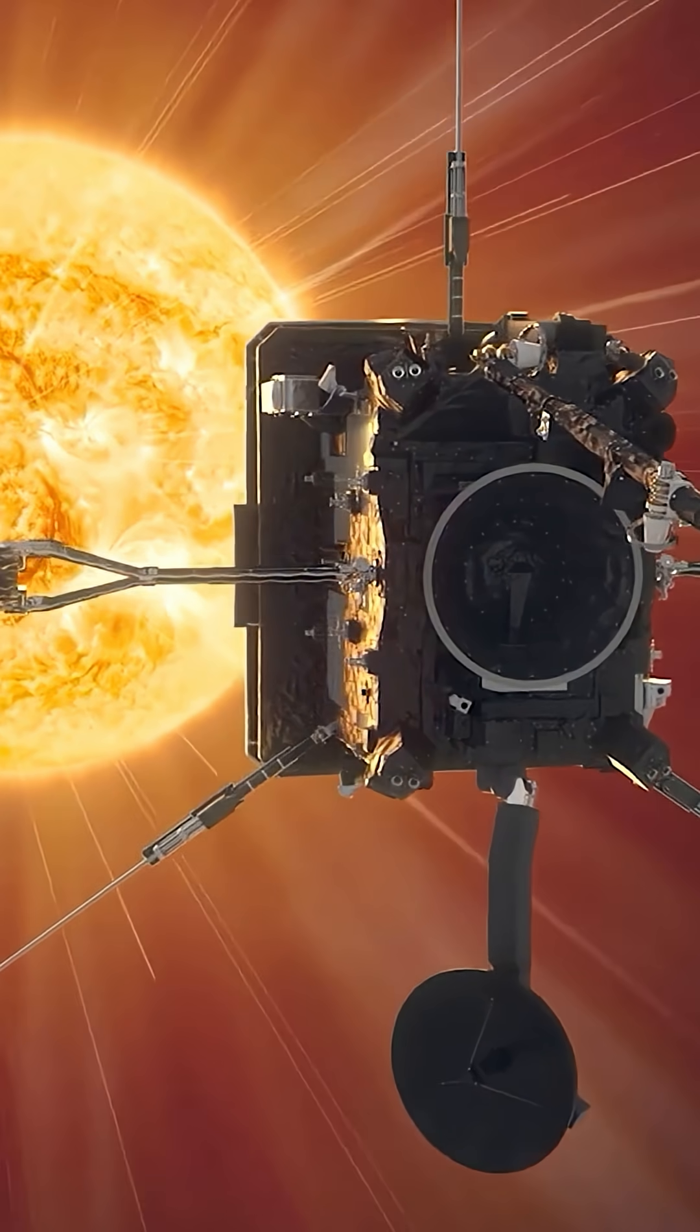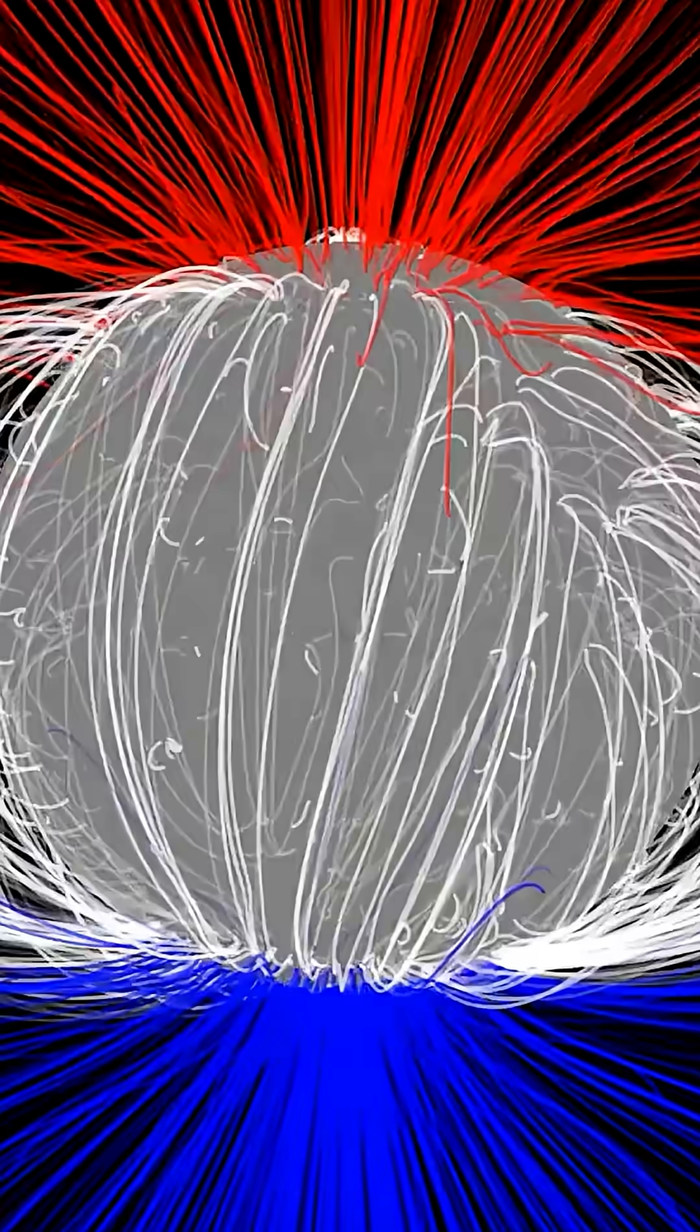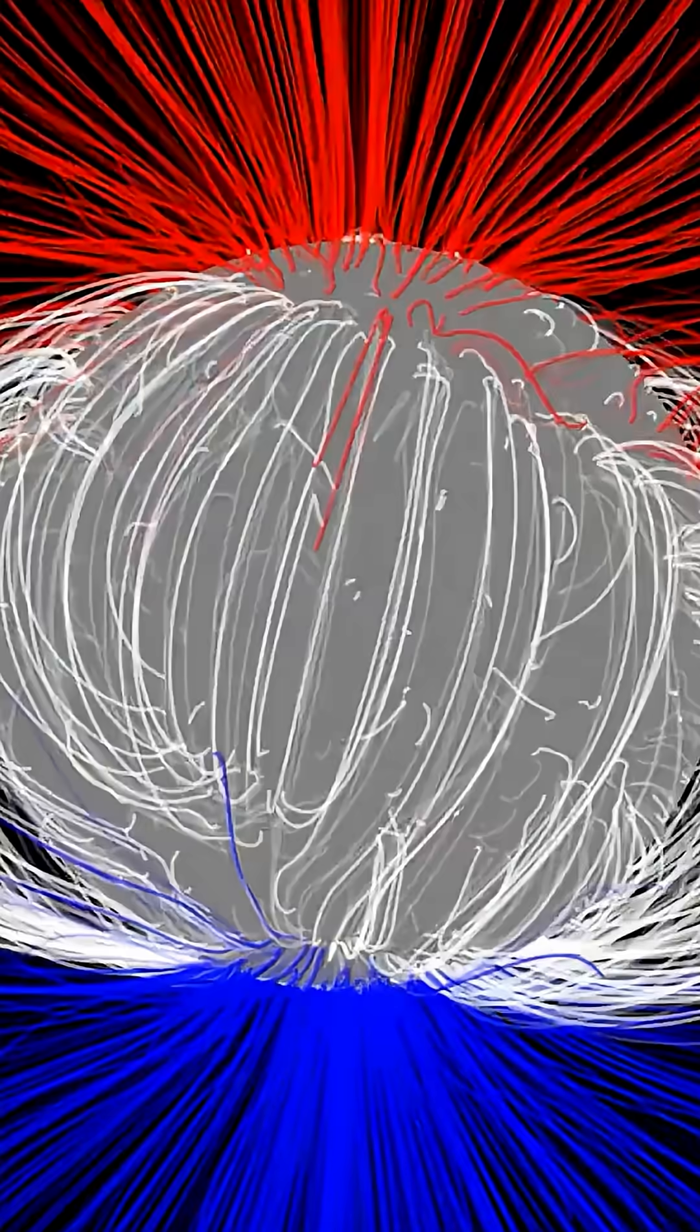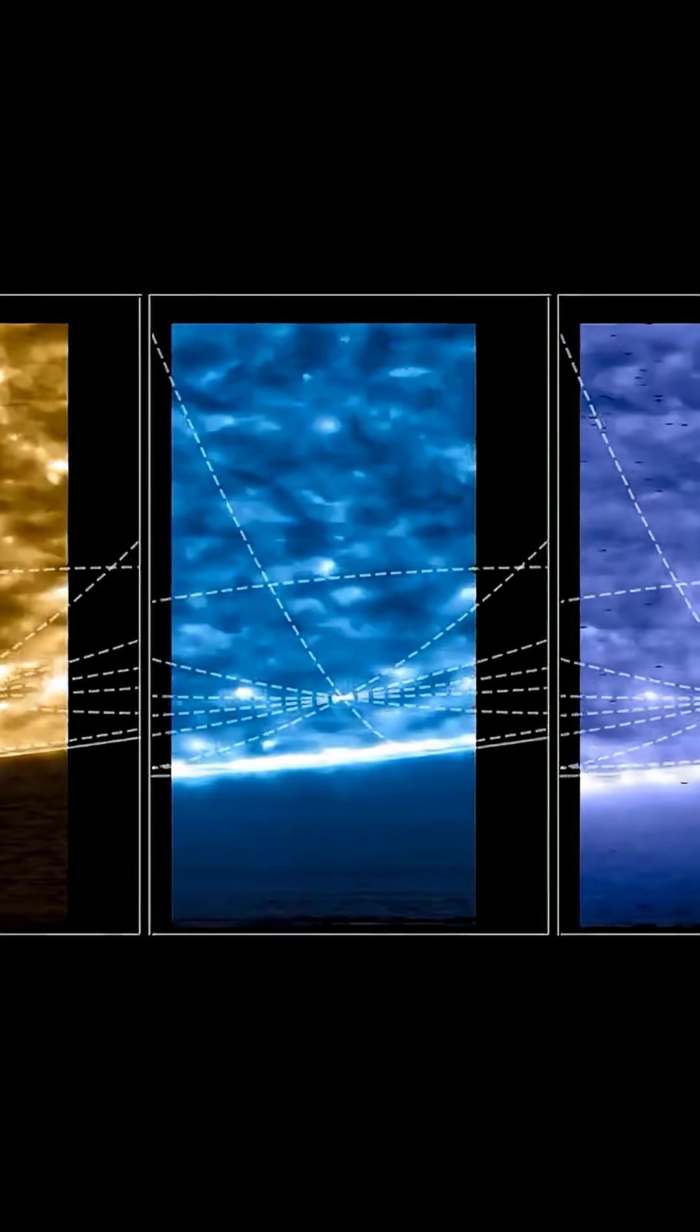But Solar Orbiter is different. Remarkably, it found both the north and south poles. This is a sign that the Sun is at the peak of its 11-year cycle. It observes from the surface, through the layers in between, all the way to the outer atmosphere.